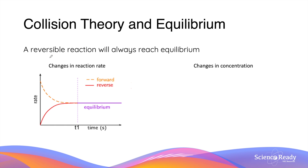A reversible reaction will always reach a state of equilibrium. The first graph shows changes in reaction rate from the beginning until equilibrium: the forward reaction rate is highest at the start while the reverse reaction rate starts at zero since there are no products initially. As the reaction proceeds, the forward rate decreases due to loss of reactants, while the reverse rate increases due to formation of products, until they become equal and equilibrium is achieved.